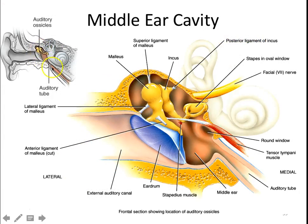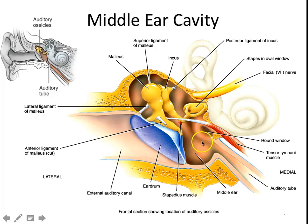Our middle ear consists of the eardrum, the malleus, incus, and stapes. The stapes sits in the oval window and vibrates there — similar to putting your hand on the surface of water and moving it up and down, causing ripples. As the stapes pulses in the oval window, the round window will also bulge to equalize the balance. Then you have the auditory or Eustachian tube that goes to the back of the upper portion of your throat.